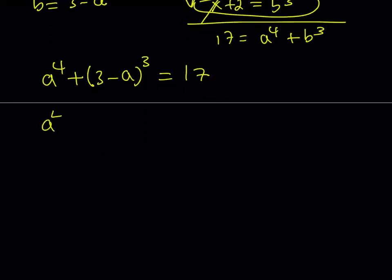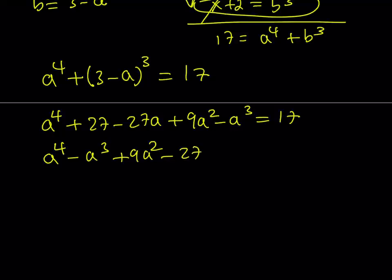Let's go ahead and expand it. We get a to the fourth power plus, now if you cube 3 minus a as you know from the binomial theorem, you can just write this as 27 minus 27a plus 9a squared minus a cubed equals 17. Let's go ahead and rearrange the terms. a to the fourth power minus a cubed plus 9a squared minus 27a. 27 minus 17 is equal to positive 10. And the whole thing is equal to 0.